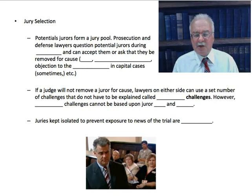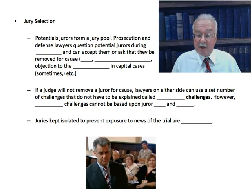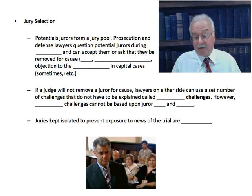One of the first things that happens is jury selection. Potential jurors form a jury pool, and prosecution and defense lawyers question potential jurors during voir dire — V-O-I-R D-I-R-E. Voir dire is the questioning of jurors to see if they're qualified to be jurors, they're not biased, etc.